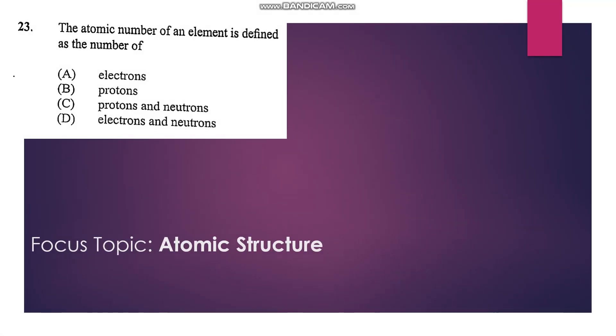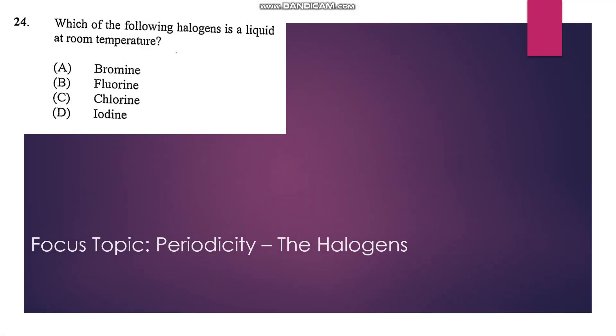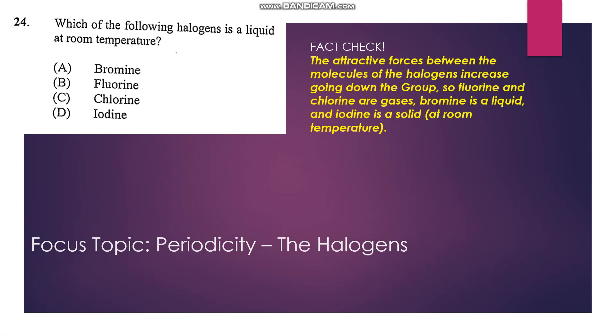Number 23: Atomic number of an element is defined as the number of... So the atomic number is based on the number of protons, and therefore B is the answer. Which of the following halogens is a liquid at room temperature? Chlorine and fluorine are gases, bromine is a liquid, so A is our answer.